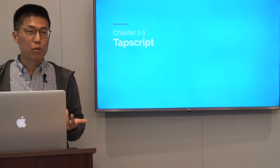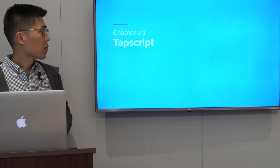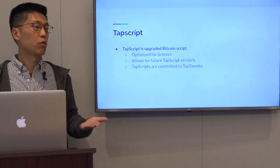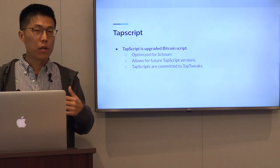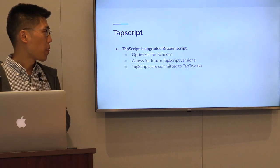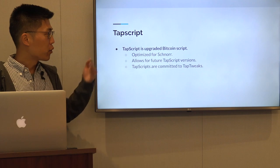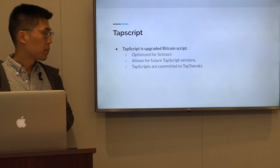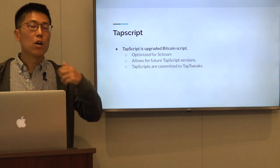Tapscript is the way we express alternative spending paths in taproot. Essentially, tapscript is nothing other than upgraded Bitcoin script — it is script that is executed when a taproot output uses an alternative spending path. Tapscript is optimized for schnorr checks: signature opcodes verify schnorr signatures. It also allows for future tapscript versions in a very easy way, and as mentioned, tapscript is committed via the tap tweak of the taproot output.